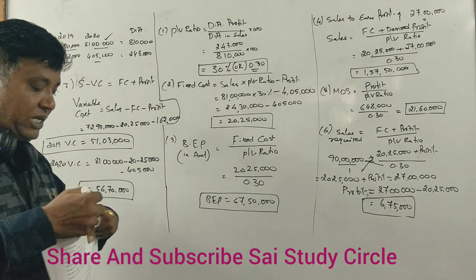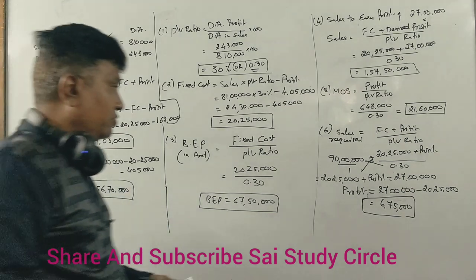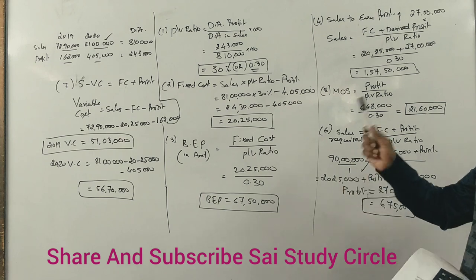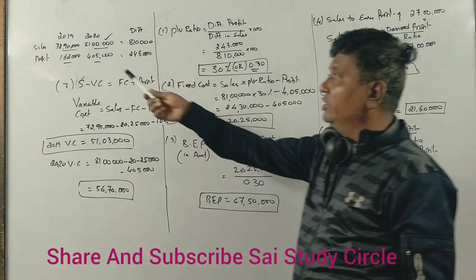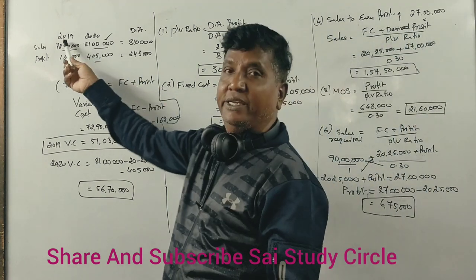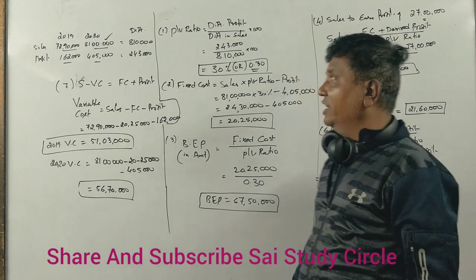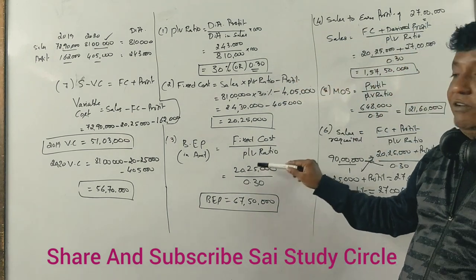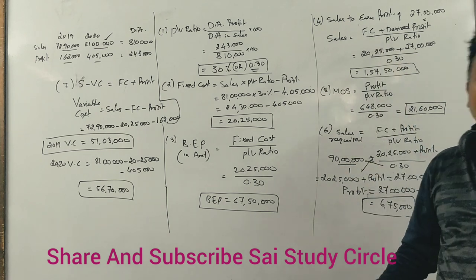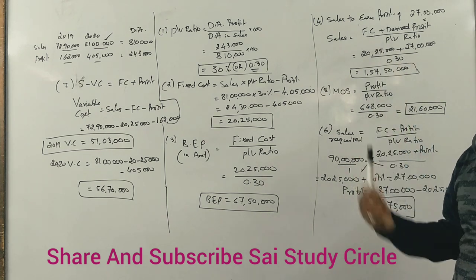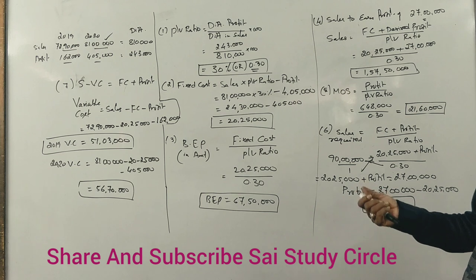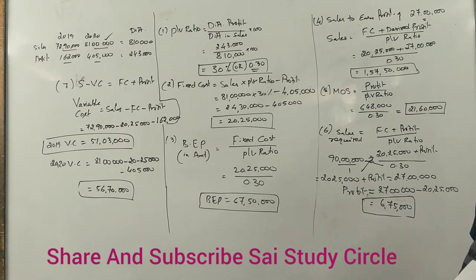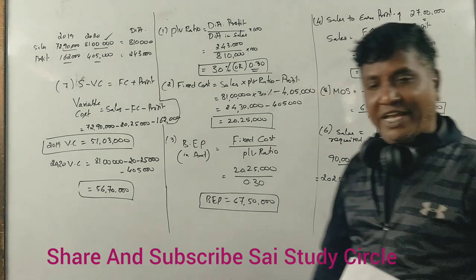That completes all parts of this revision question: PV Ratio, Fixed Cost, Break-even Point, Sales to earn target profit, Margin of Safety, Profit when Sales is 90,00,000, and Variable Cost for both years. All the best for your exam. Thank you.